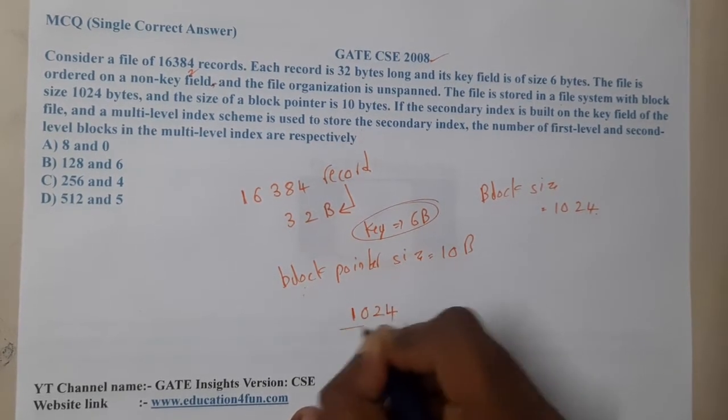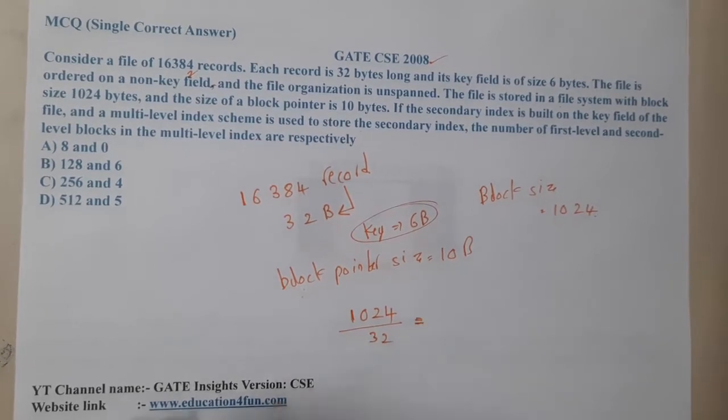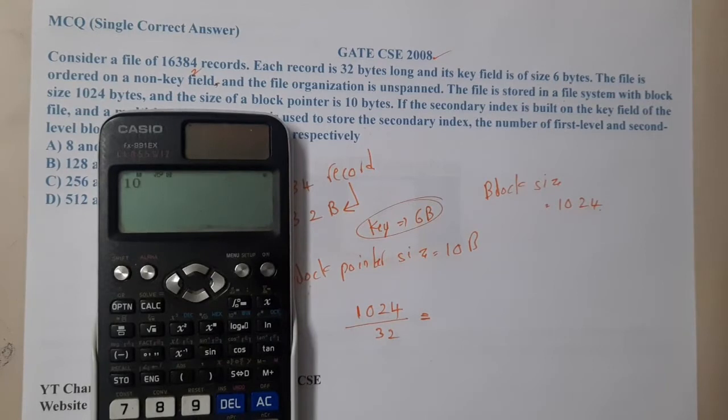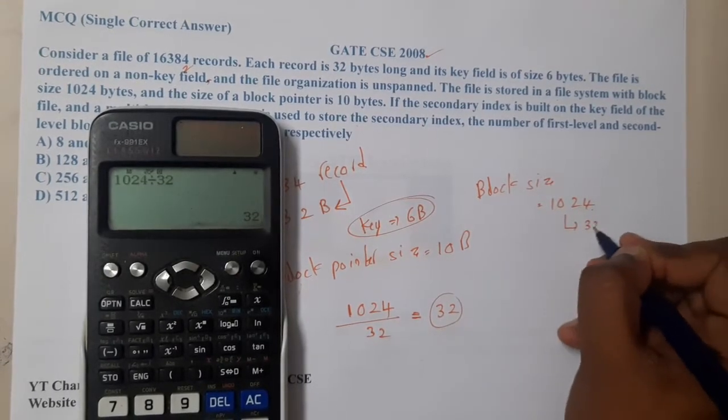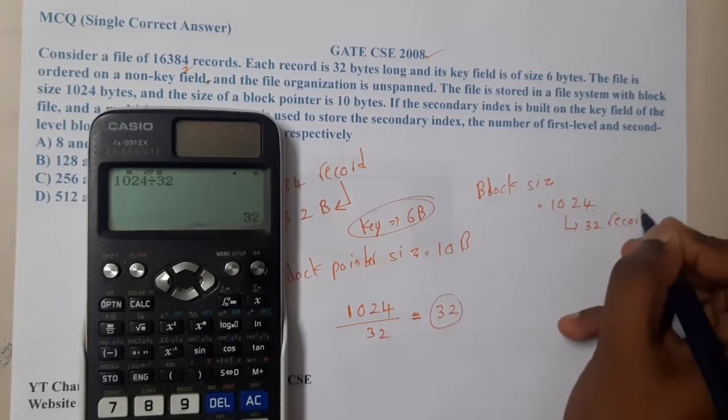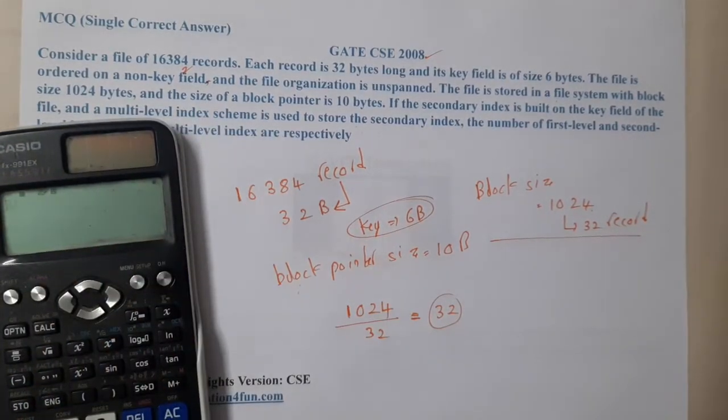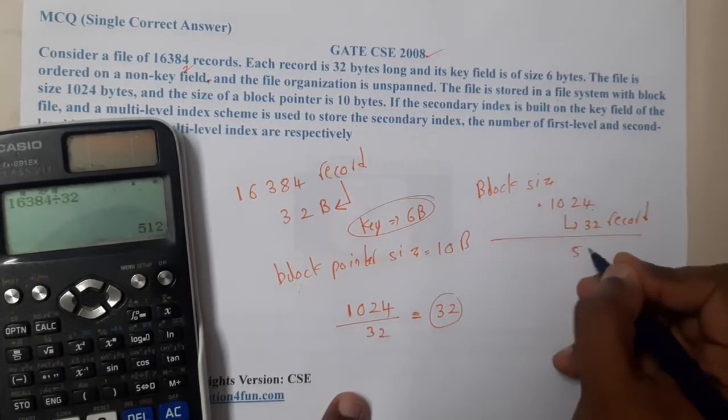Let us assume this is our block size, so our block size is 1024 and each record will carry 32 bytes. Indirectly, how many entries can we fit? It is nothing but 1024 divided by 32, which is 32. So per block I can fit 32 records. If I can fit 32 records, for 16,384 records how many blocks do I need? I need 512 blocks.